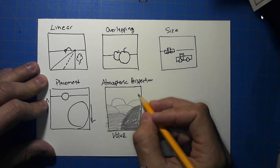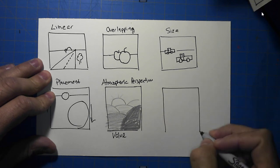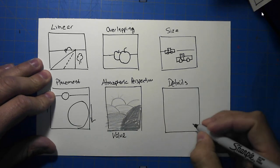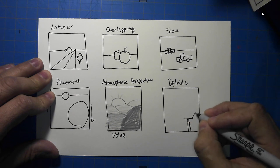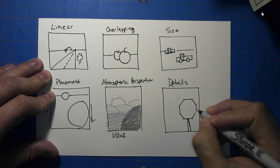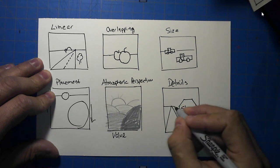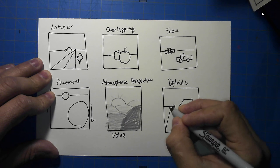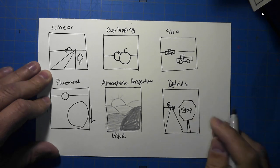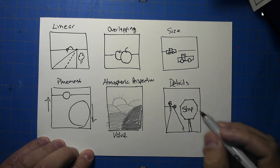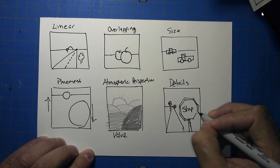Mountains get lighter as they go off into the distance. And the last one is detail — things that are closer to us tend to have more details. For example, let's make a stop sign here and another stop sign over here further away. You can't really tell the letters on the sign that's further away. So things that are closer to us show more details, and things that are further away do not.